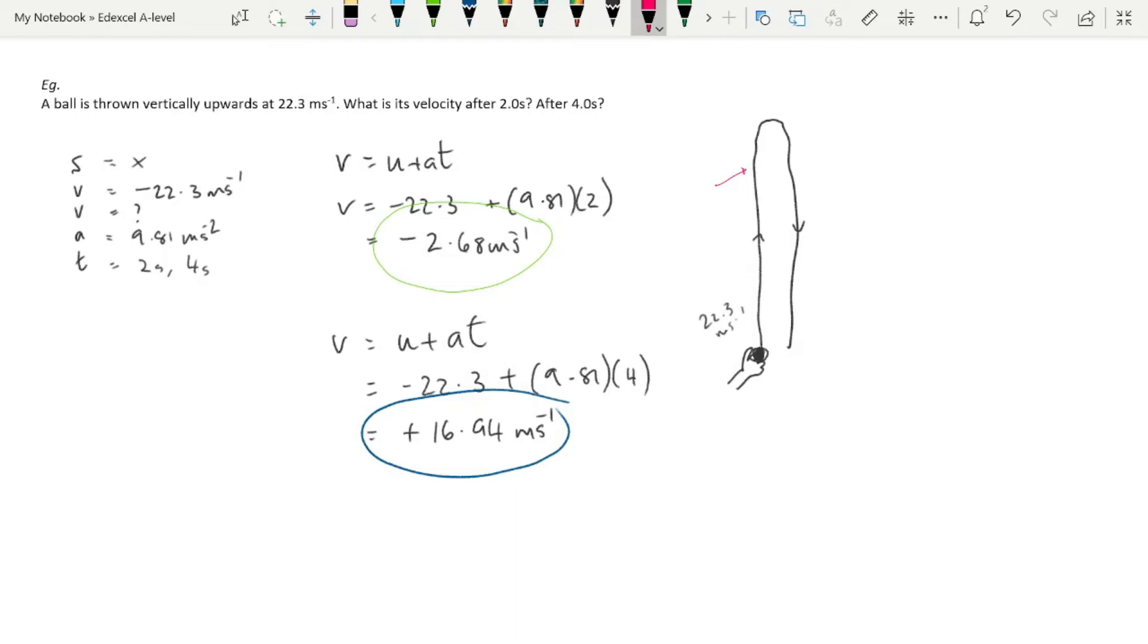Whereas at 4 seconds, it's somewhere down along there. It has turned around and started coming back down because now it has a positive, downward velocity.